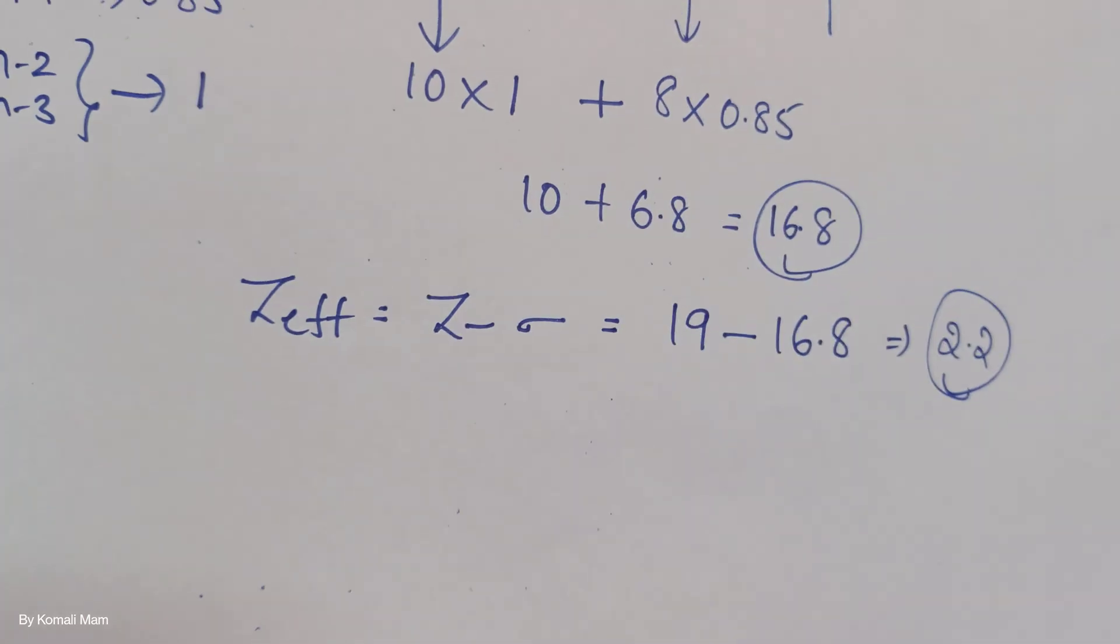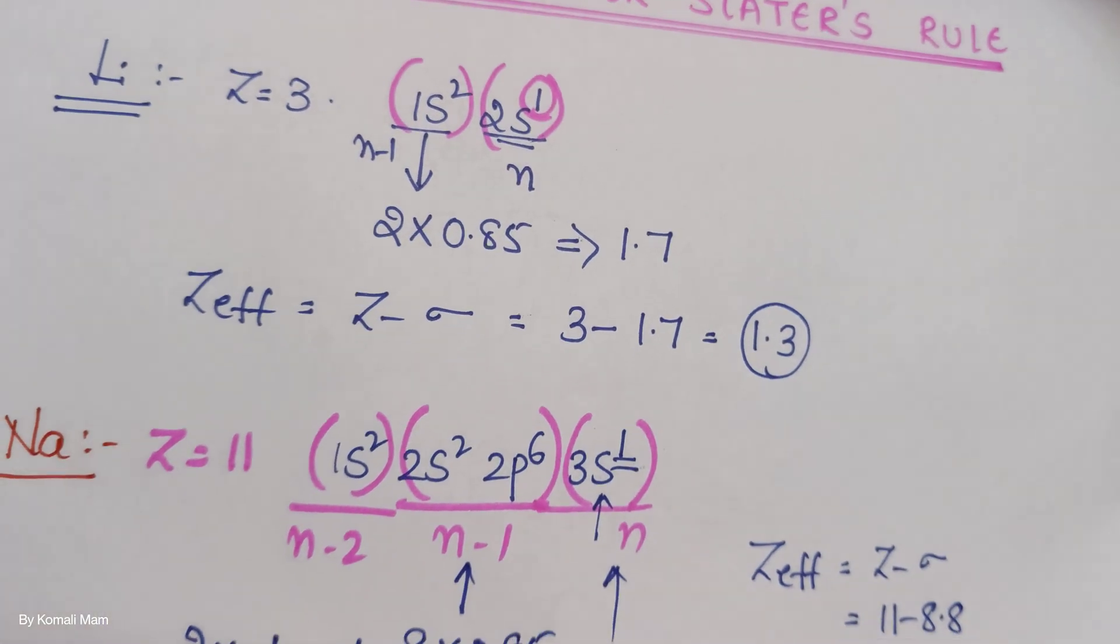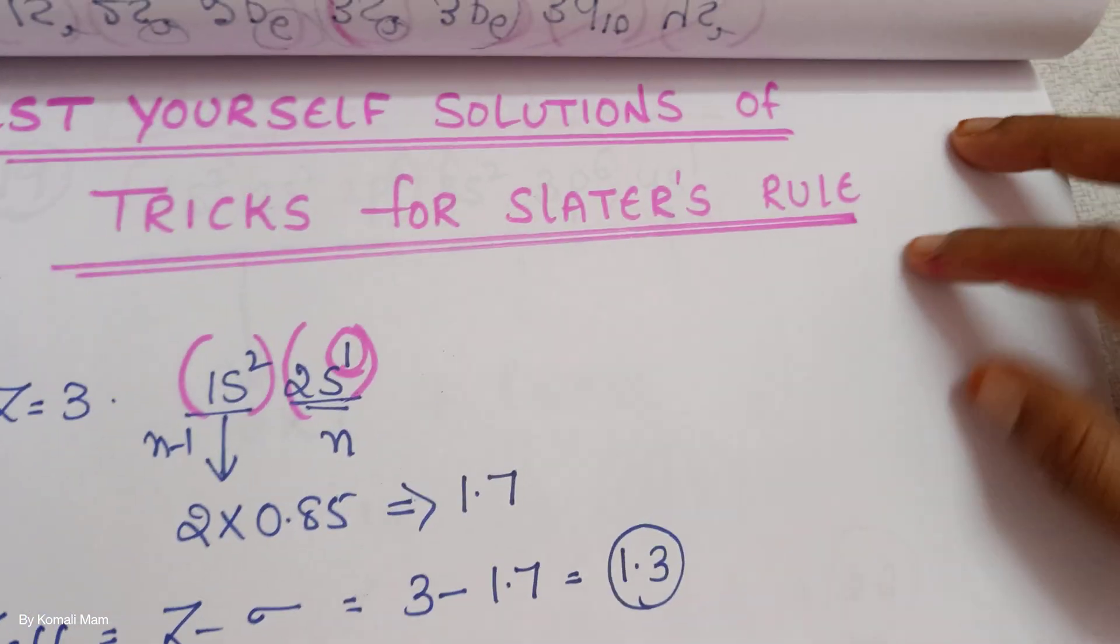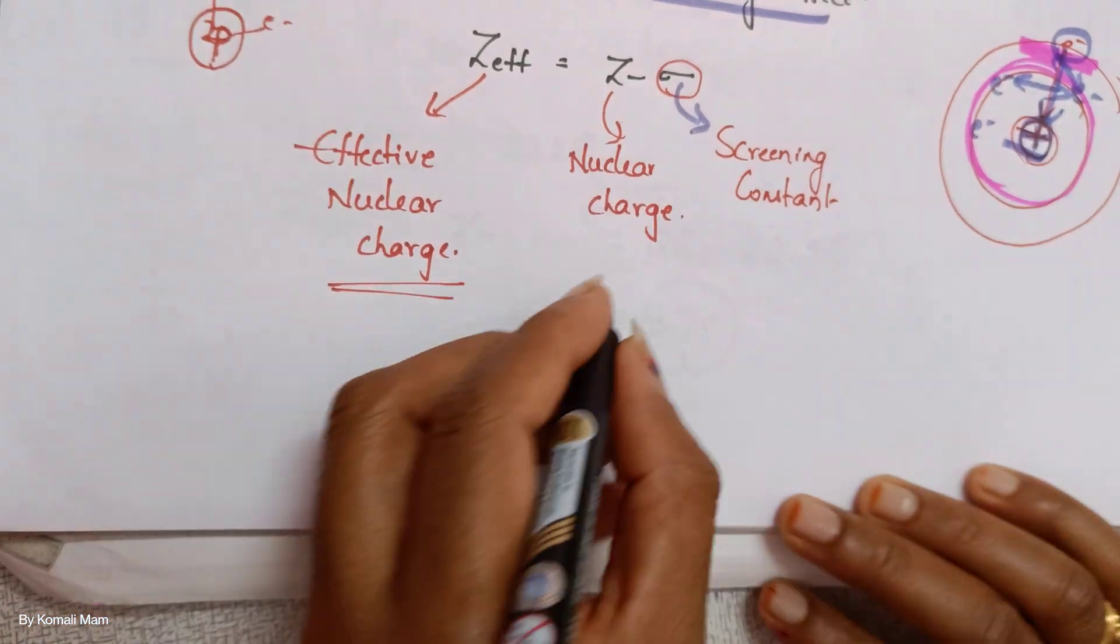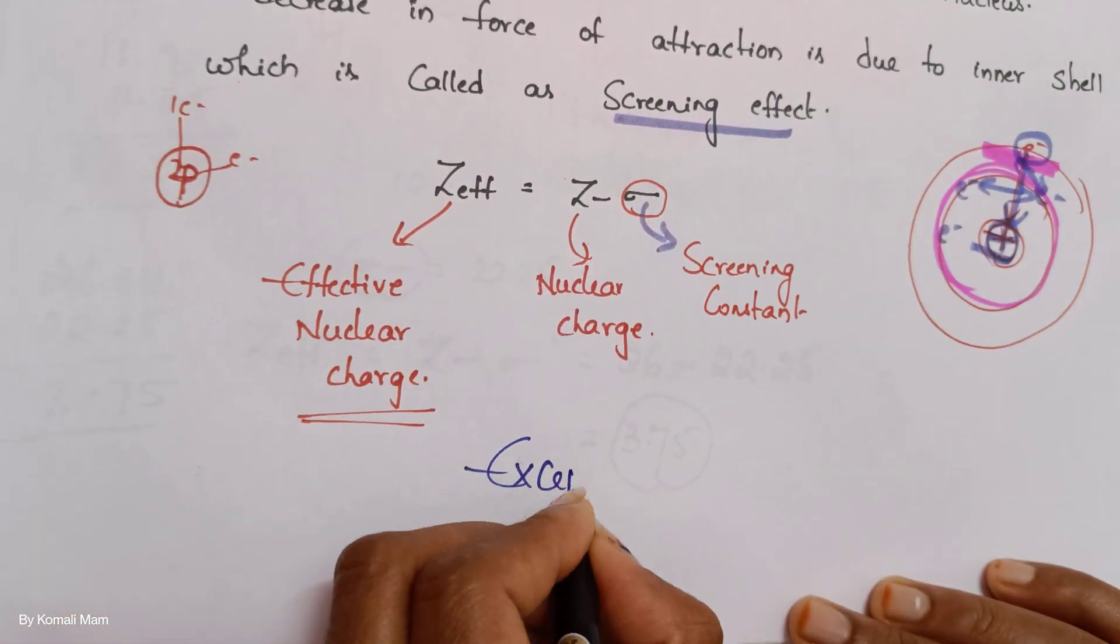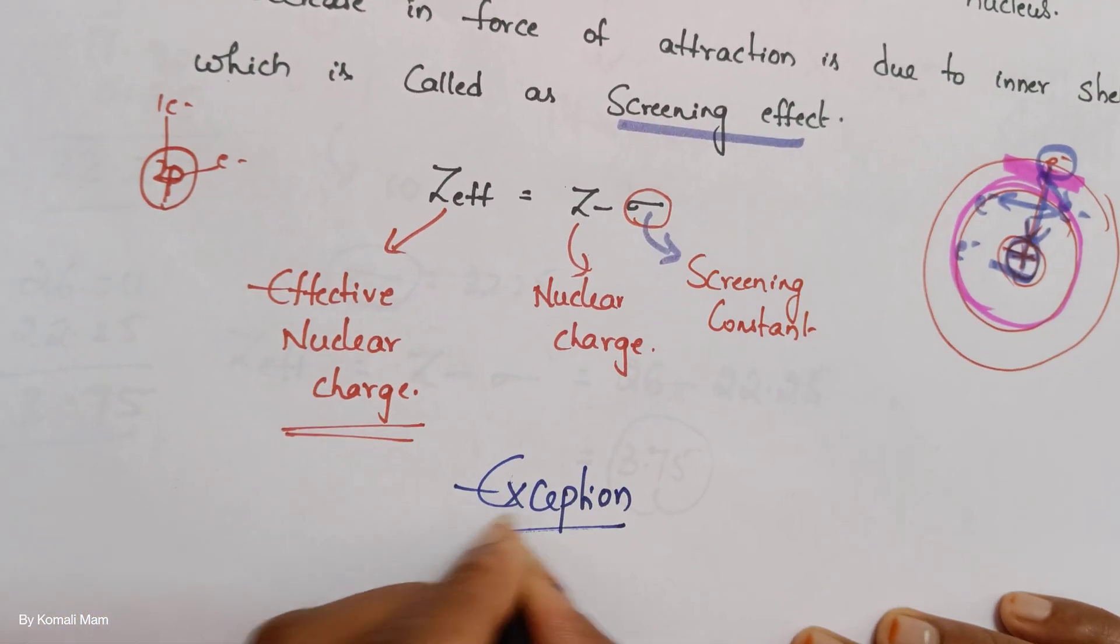Now check it out. Any question from Slater's rule, you will do without any mistakes. Here there is one exception. That exception is, exception is, whenever you are calculating for, you know, oneness,